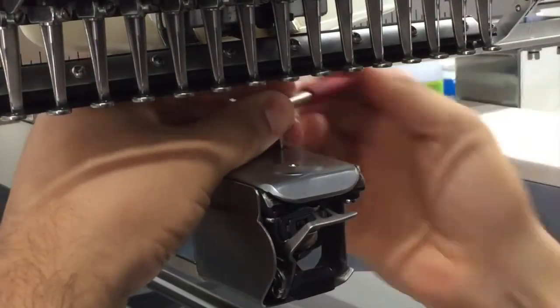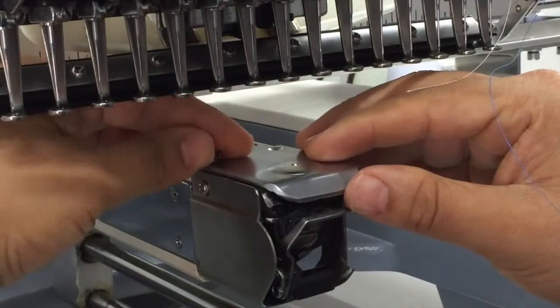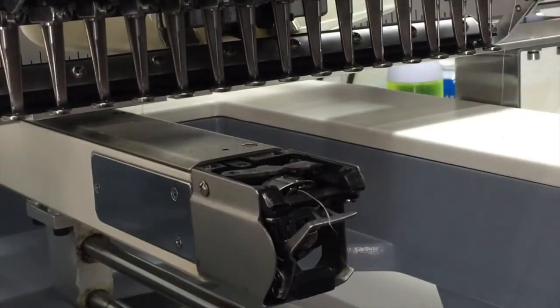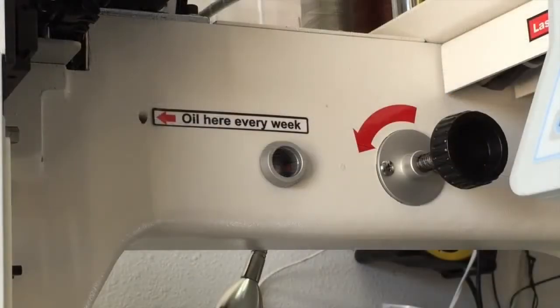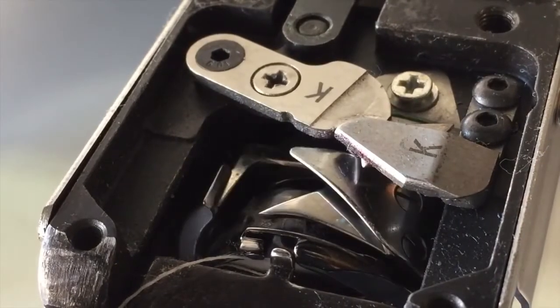To check the rotary hook timing, we must remove the needle plate. To load the needle, push and rotate the block knob counterclockwise until you see the tip of the hook on the back of the needle.